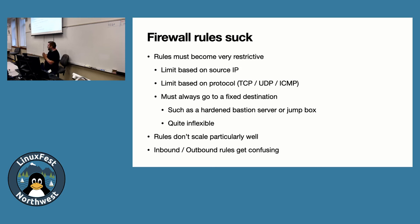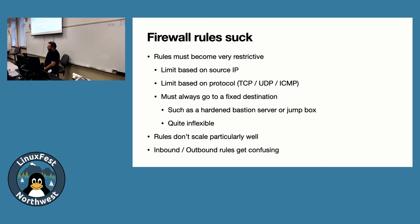We need firewall rules to restrict traffic in and out of our network. They've got to be restrictive — we have to say that a certain source IP address can connect to a certain destination IP address on a specific port and specific protocol. But that doesn't actually solve the port forwarding problem. To some degree you can limit source IPs, but they don't scale particularly well.